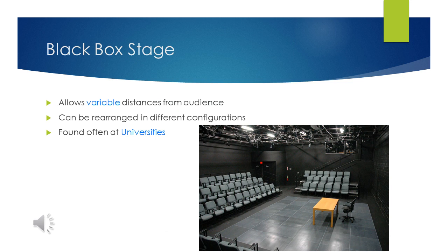Next is the black box stage. This stage allows there to be a variable distance from the audience. What do I mean by variable? Well, it can be arranged in different configurations, so for one show you might have the audience very close and around three sides, like a thrust stage, or the next you might have them further away and only on two sides. These stages are often found at universities due to their flexible nature and can be found in many different community theaters.